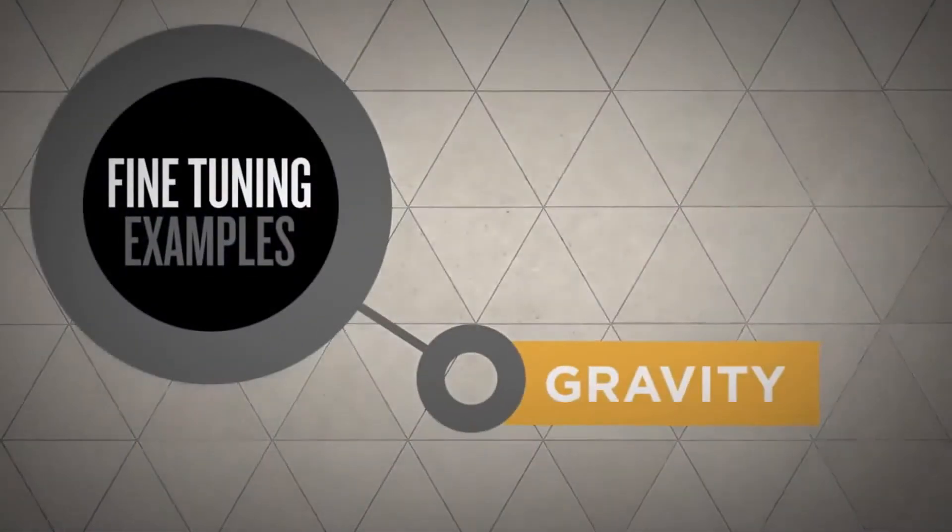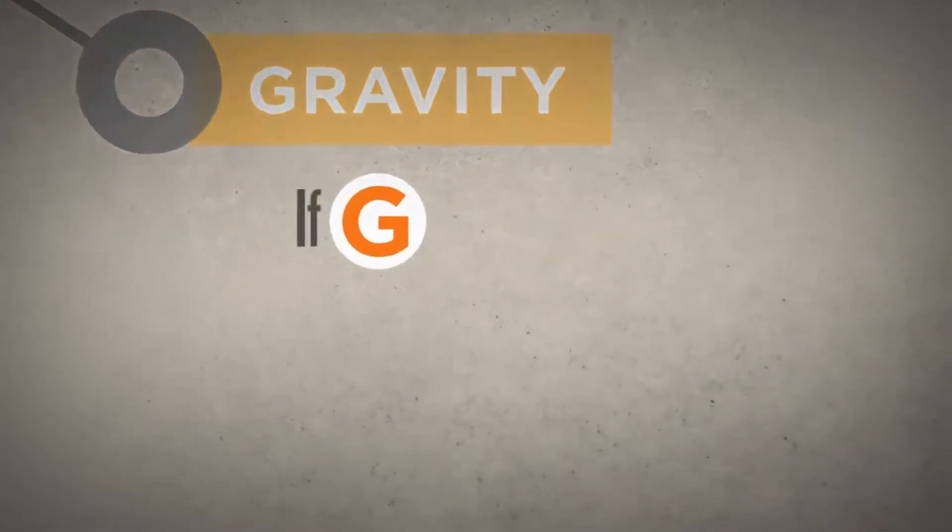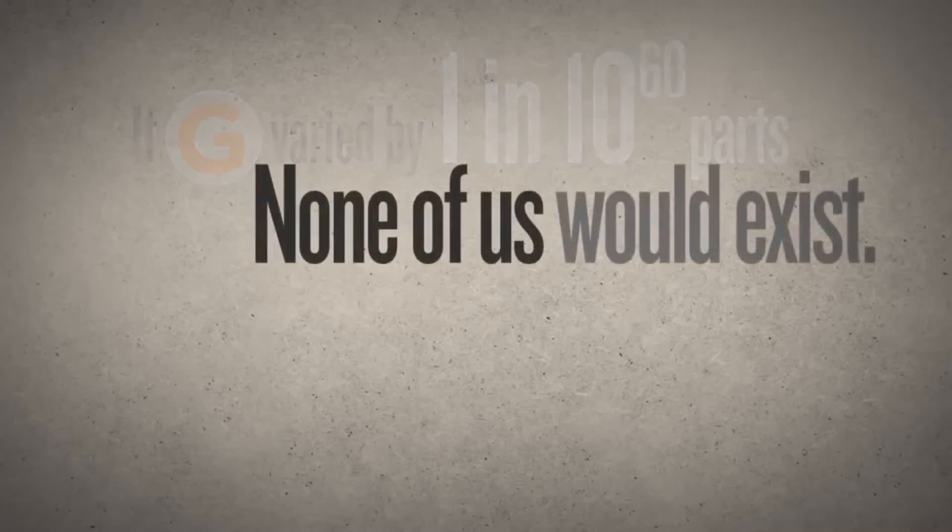Consider gravity, for example. The force of gravity is determined by the gravitational constant. If this constant varied by just 1 in 10 to the 60th parts, none of us would exist.